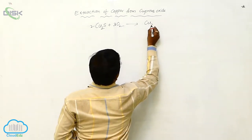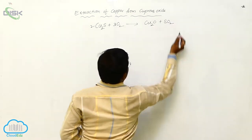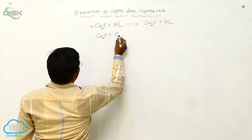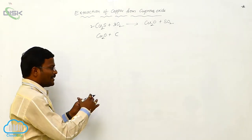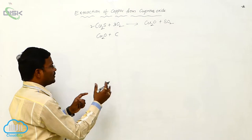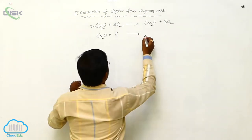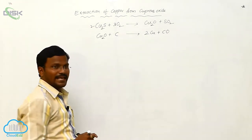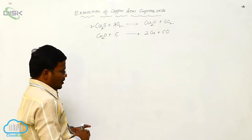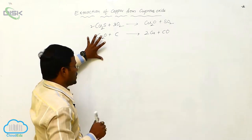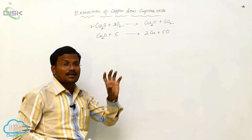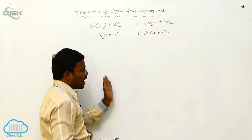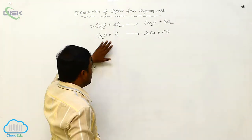The cuprous sulfide converts into cuprous oxide with sulfur dioxide at high temperature. The formed cuprous oxide (Cu2O), when reacted with coke present in the reverberatory furnace, reacts with carbon and converts into copper plus carbon monoxide. First, the sulfide ores of copper are concentrated in the reverberatory furnace, followed by conversion of sulfide ores into oxide ores of copper.